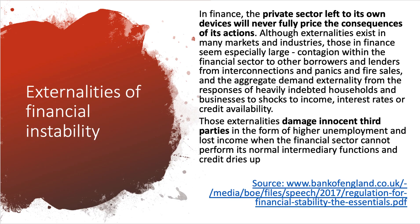First of all, externalities. You can make a case that when the financial market is working well, it has a public good aspect — people have security and trust in financial markets. But when the financial sector underperforms, when there's a lot of instability and crisis, there are often negative externalities. As the Bank of England noted in 2017: although externalities exist in many markets, those in finance seem especially large, particularly because of systemic risk and contagion effects — a problem flaring up in one financial market can have wide-ranging effects damaging innocent third parties.